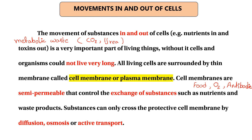The membrane also protects against carbon dioxide and urea. Substances can only cross the cell membrane by diffusion, osmosis, or active transport. Diffusion moves from high concentration to low concentration, and osmosis moves from high concentration to low concentration through a semi-permeable membrane, but only for water. Osmosis is a special type of diffusion.